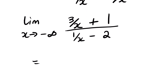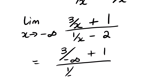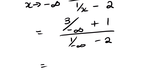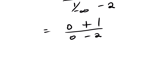From here, substituting negative infinity: 3 over negative infinity gives 0, and 1 over negative infinity gives 0. So we have 0 plus 1 in the numerator, and 0 minus 2 in the denominator. Our final answer is negative 1 over 2.